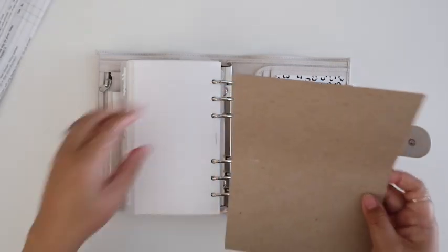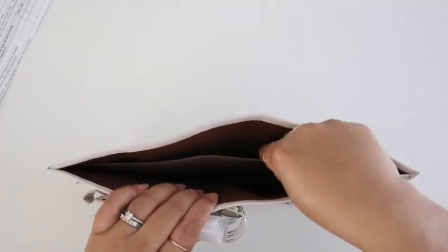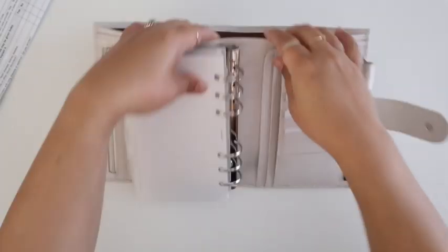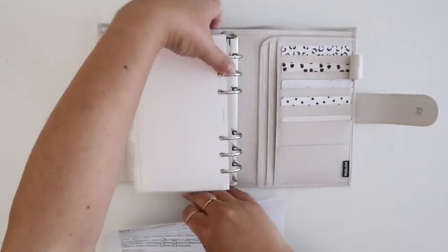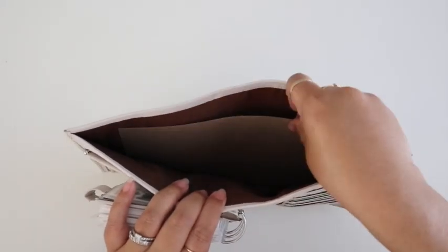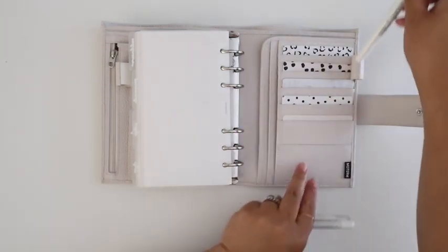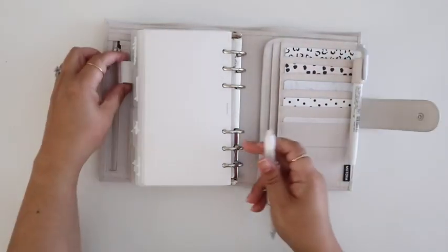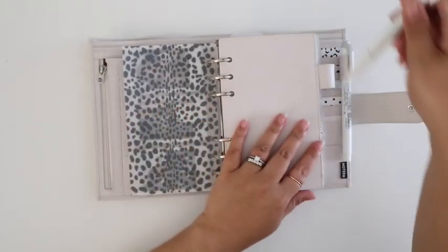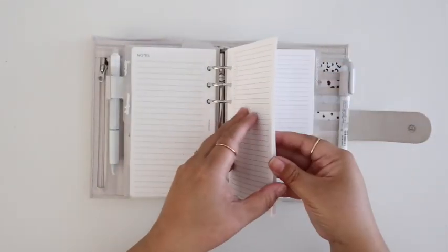And then in the big back pocket, I keep this ugly piece of cardboard. I've been meaning to get a cute one, but for now this does the job. I keep it there to put a little more structure to my planner. And then I just keep miscellaneous pieces of paper back there that I need to tend to. And of course, I have my favorite gray mild liner and my erasable friction pen there in the pen loops.